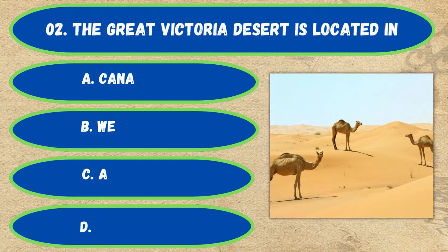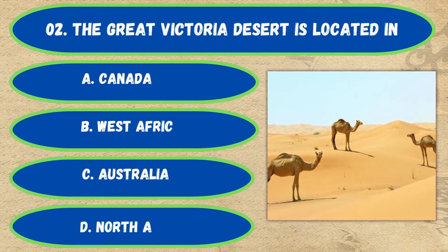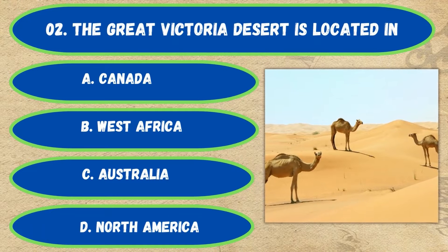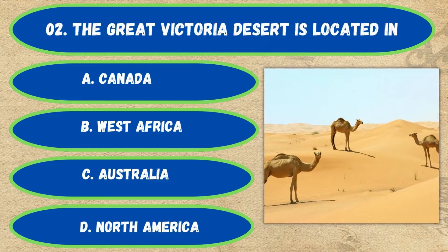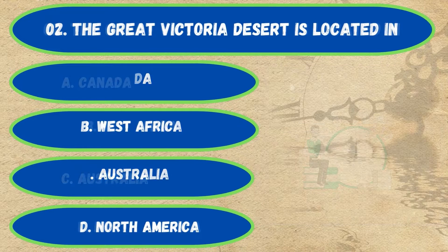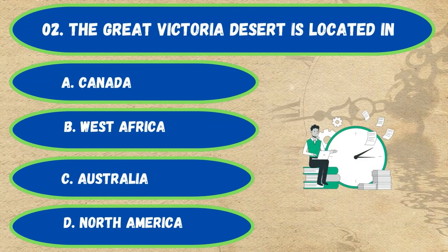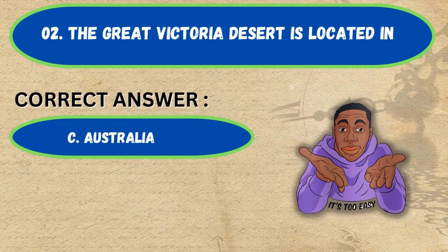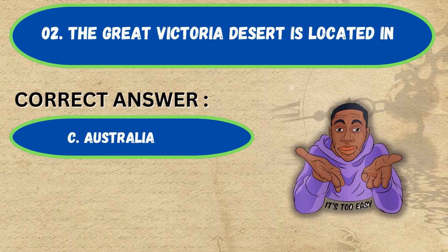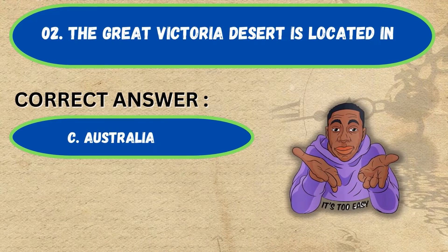Question number 2. The Great Victoria Desert is located in: option A, Canada; B, West Africa; C, Australia; D, North America. The correct answer is option C, Australia.